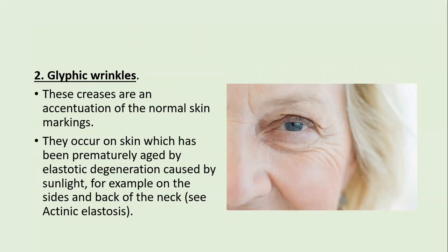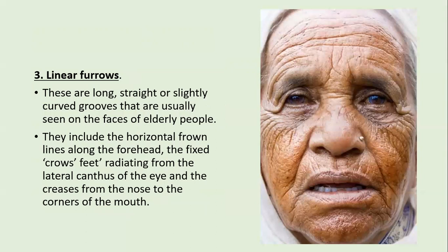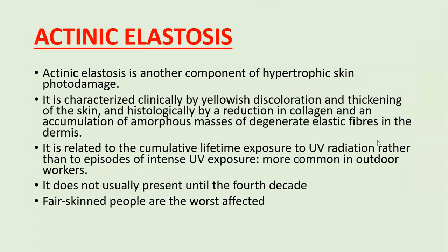Glyphic or dynamic wrinkles are creases that are accentuations of normal skin markings. They occur on skin prematurely aged by elastotic degeneration caused by sunlight and smoking. Linear furrows are wrinkles that remain static and do not change with expression or movement. They are long, straight, or slightly curved grooves seen on elderly faces, including horizontal forehead furrows, crow's feet, nasolabial folds, and linear smoker lines.